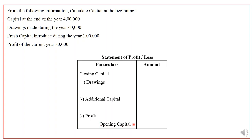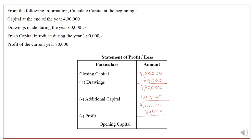Closing capital is 4 lakhs. Add drawings of 60,000 to get 4 lakh 60,000. Deduct additional capital of 1 lakh to get 3 lakh 60,000. Since opening capital is missing, we deduct the given profit of 80,000 instead of deducting opening capital. The opening capital is therefore 2 lakh 80,000.